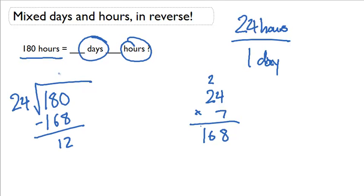So really what happens is that with seven I have seven days with a leftover of 12 hours. So 180 hours is seven days and 12 hours.